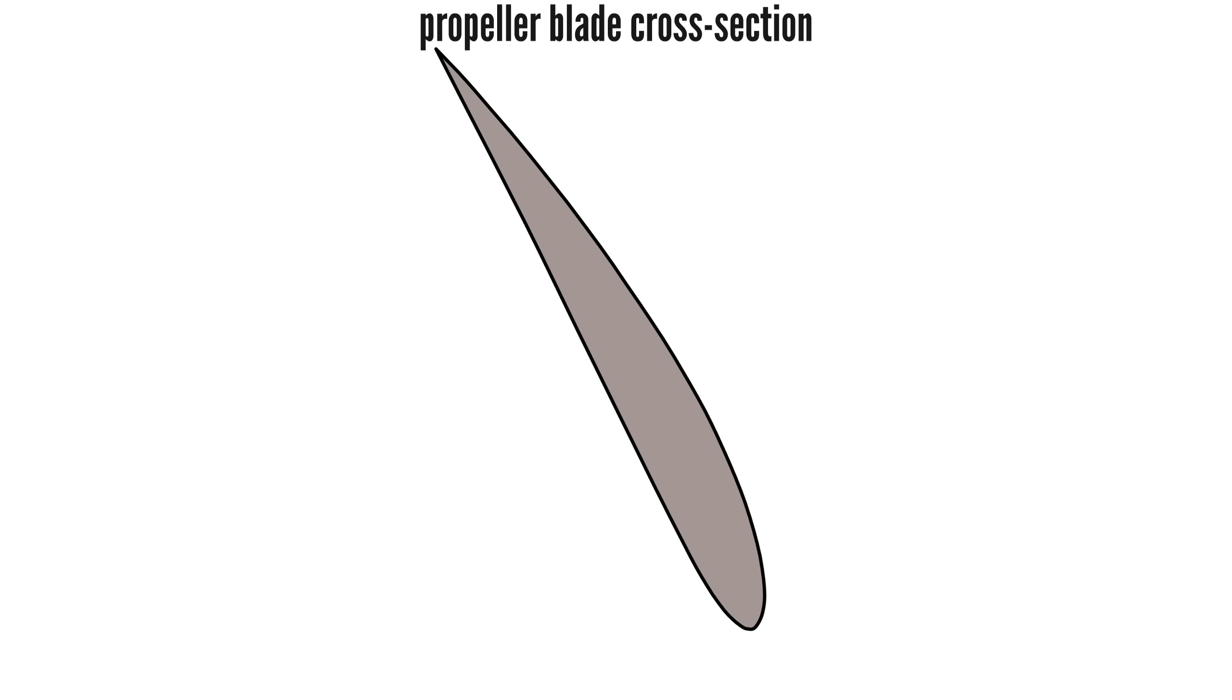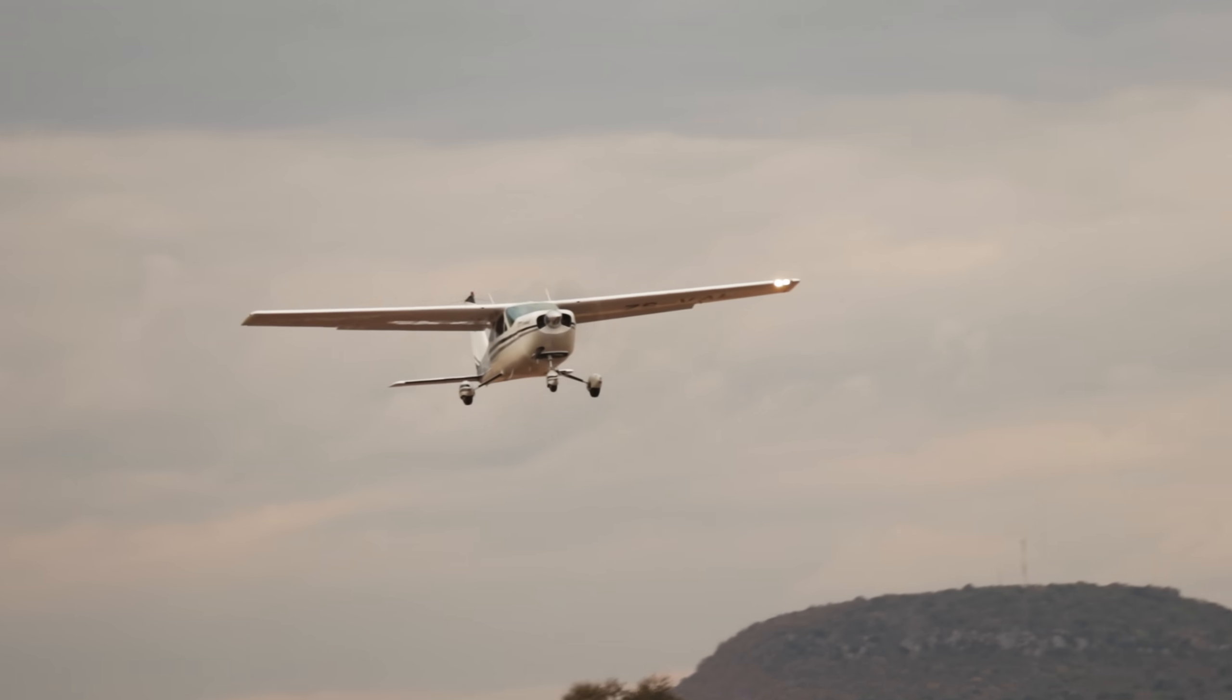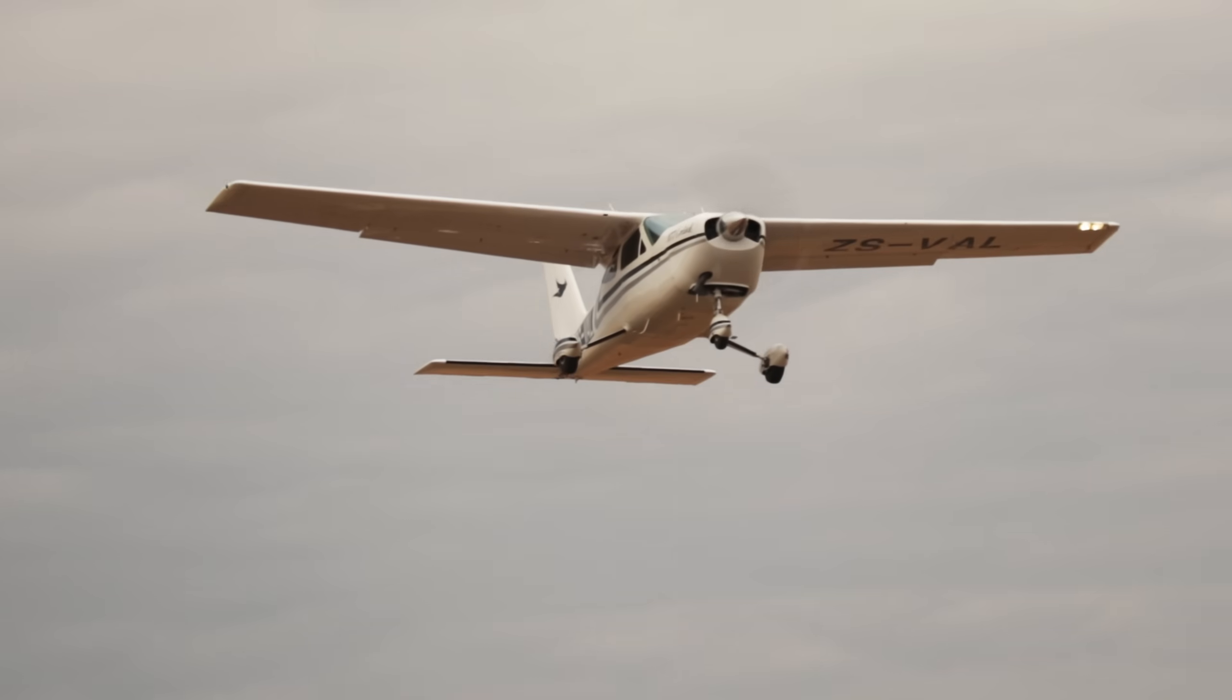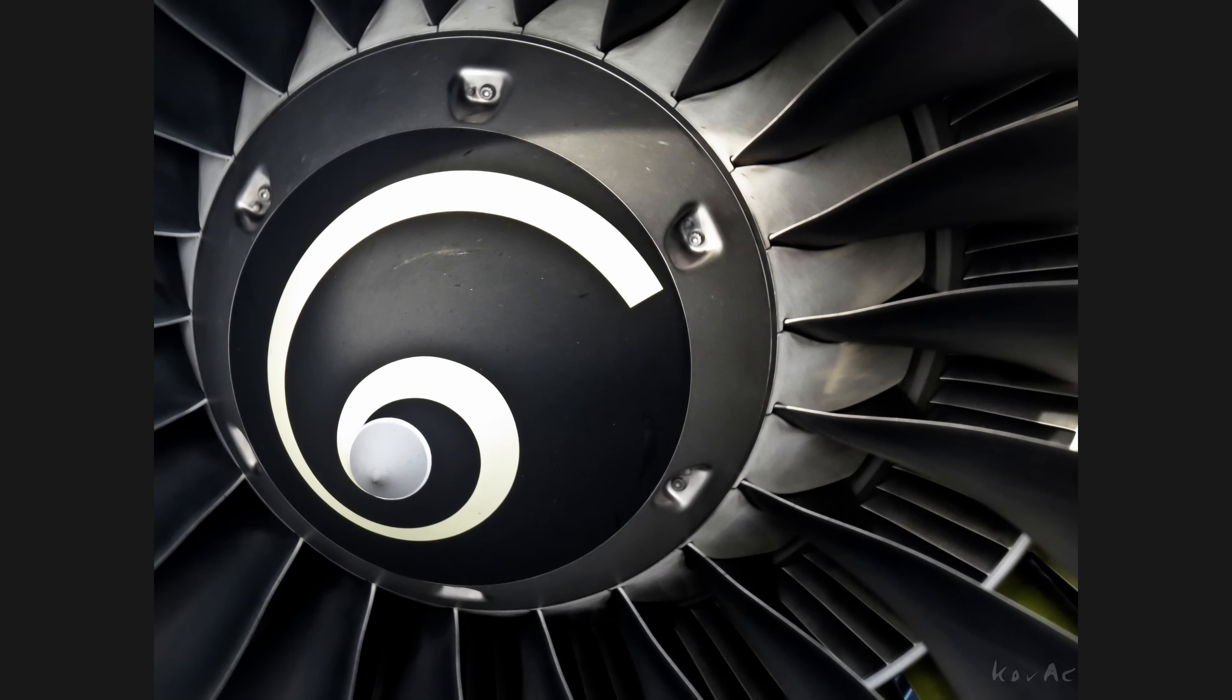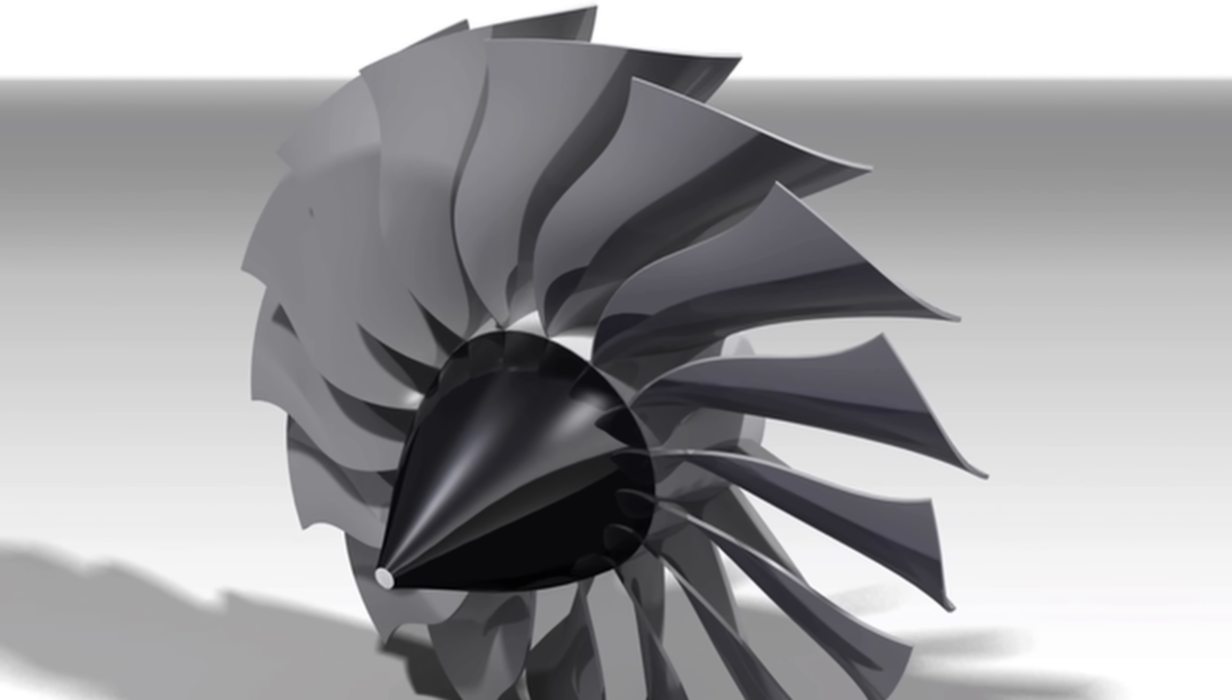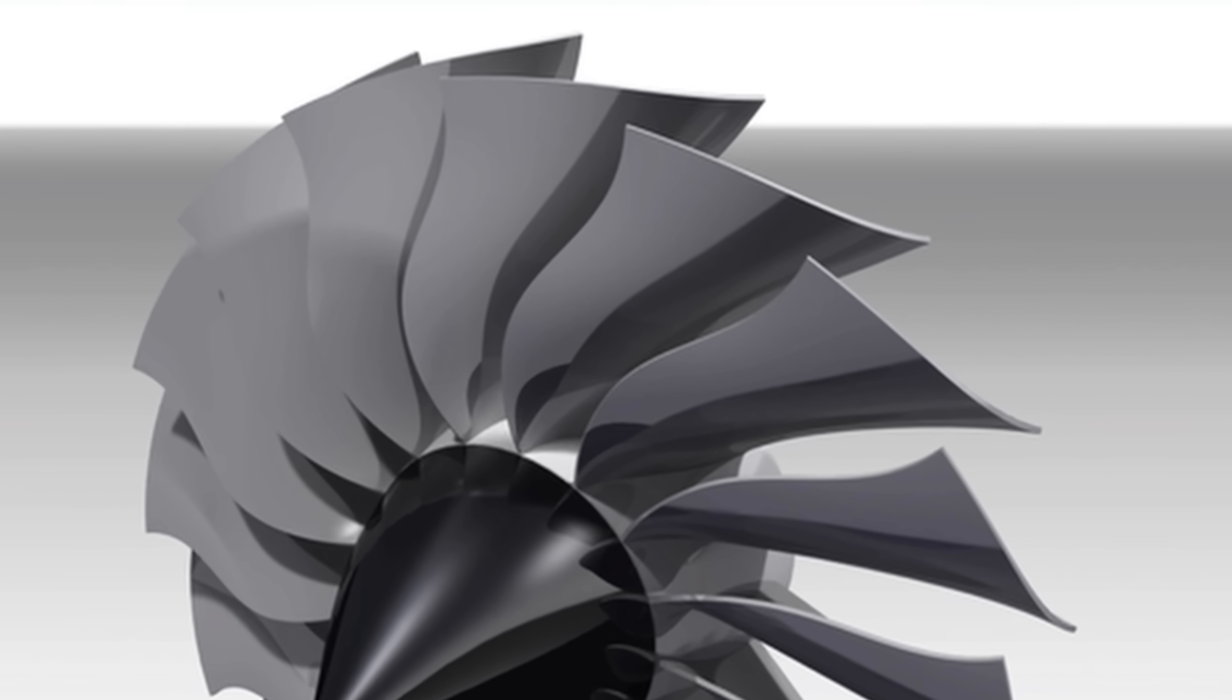Propeller blades usually have more camber and are optimized for moving large volumes of air relatively slowly. This is great for static thrust and low speed efficiency, but is less efficient at high air speeds, especially close to subsonic speeds at which airliners fly. Fan blades, on the other hand, are flatter and optimized for compressing air and maintaining efficiency at high speeds. They produce less static thrust, but are far more efficient during high speed cruise flight.